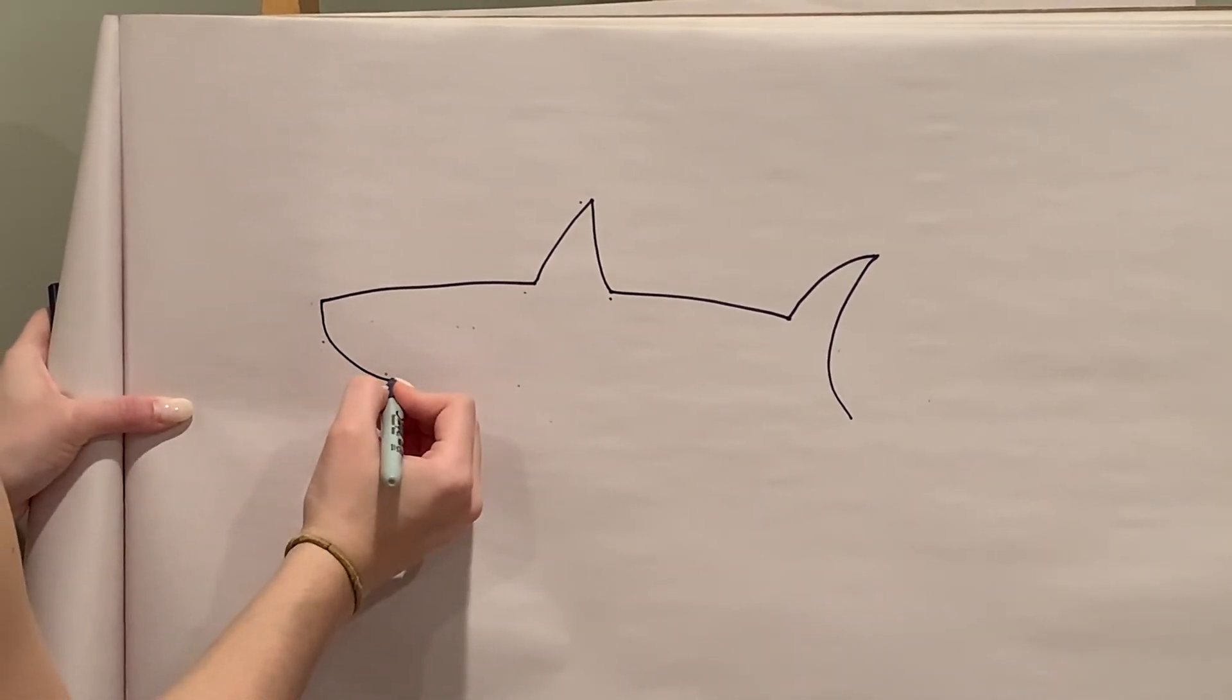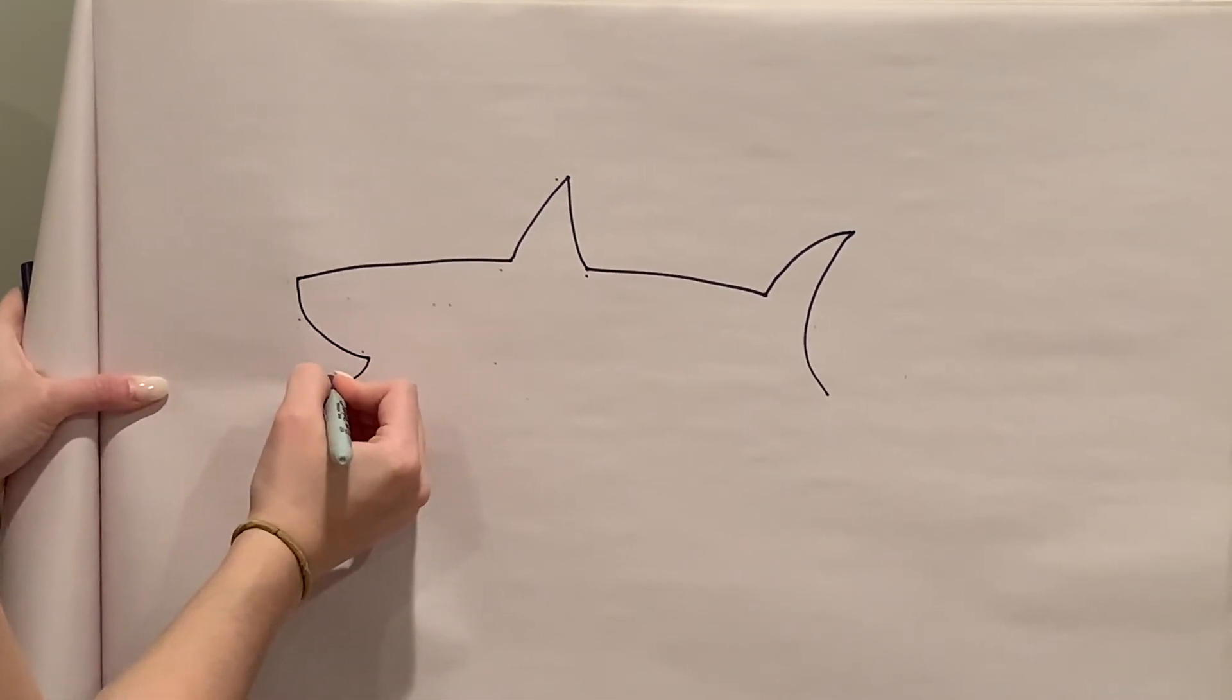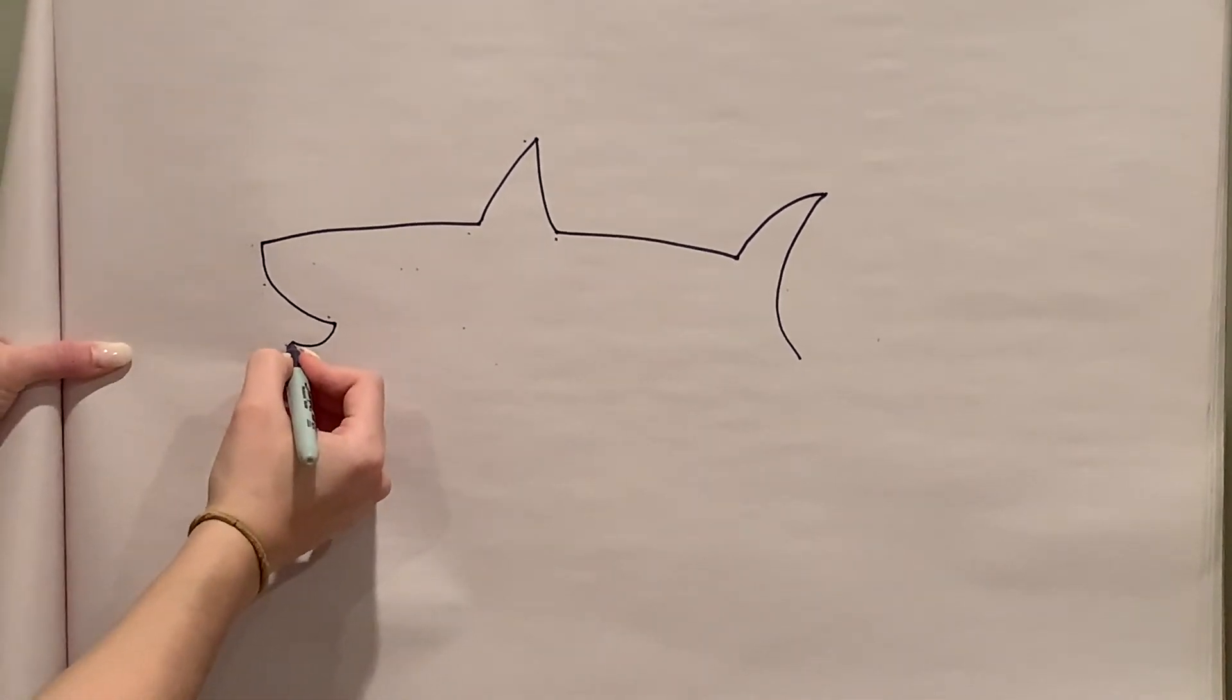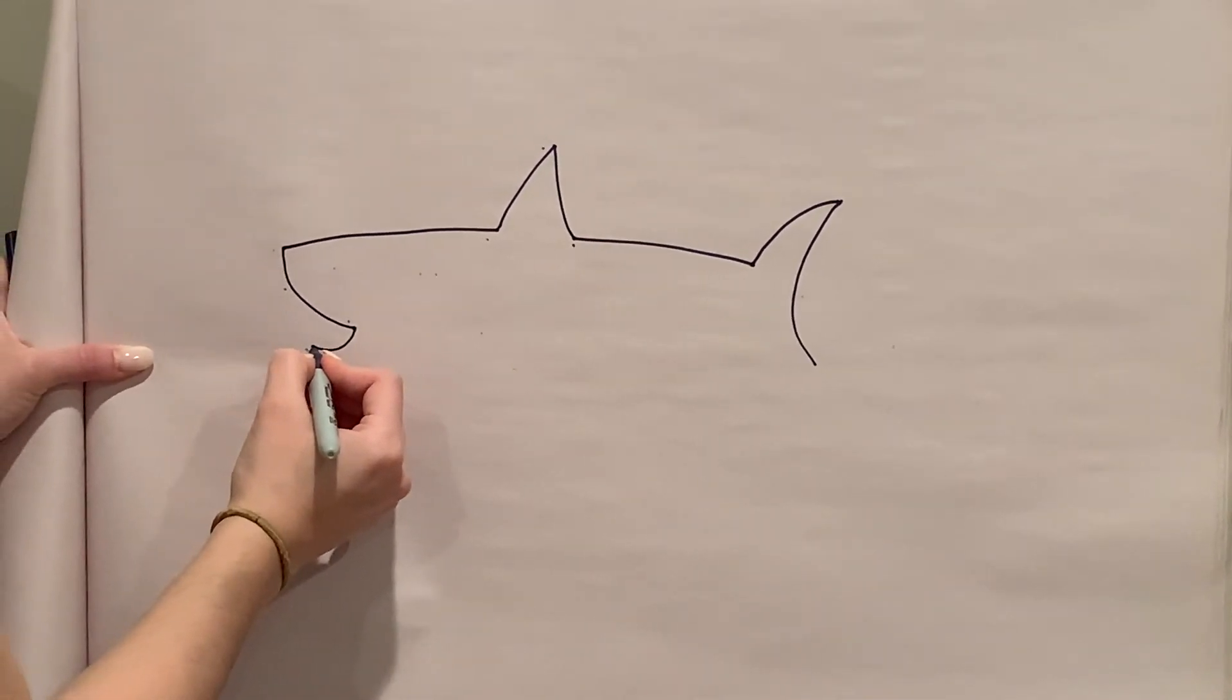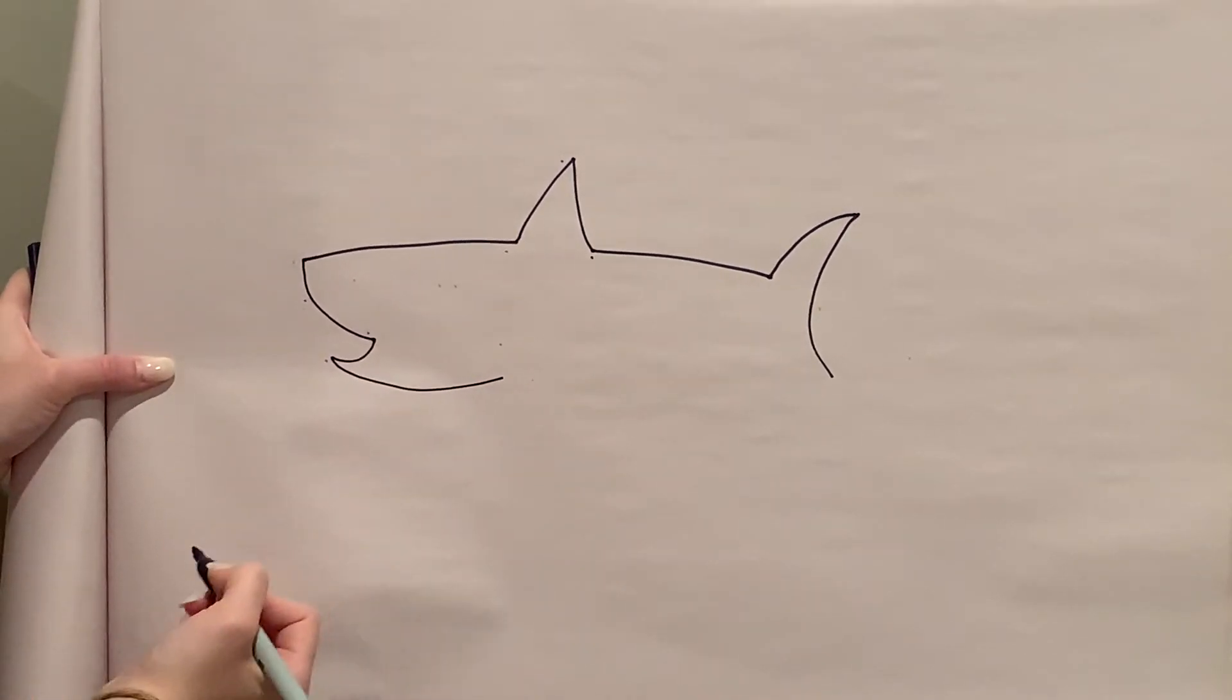Step seven, draw a smaller smile shape. Step eight, draw another straight line. Mine turned out a little curvy. It's okay.